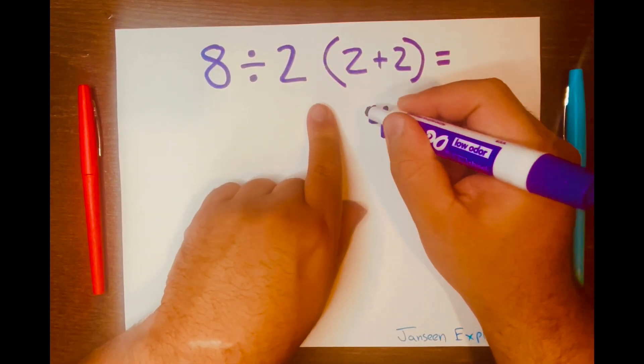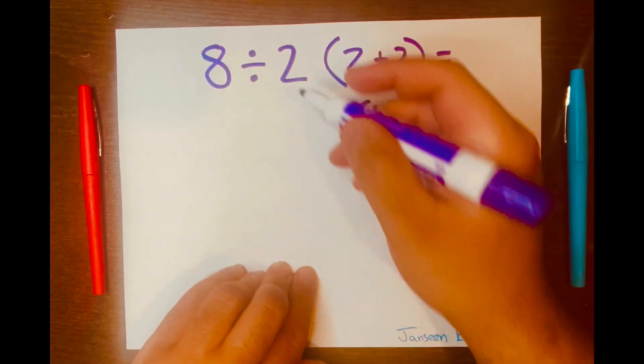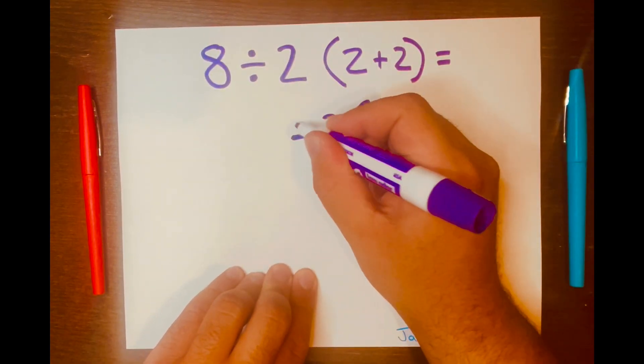So 2 plus 2 is 4, and then keep the brackets and then bring down that 2, bring down that division symbol, and then bring down that 8. Now you have 8 divided by 2 times 4.